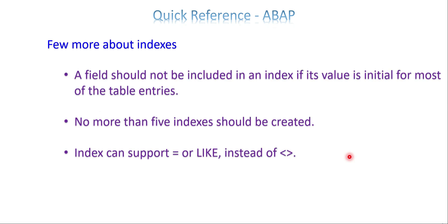A field should not be included in an index if the value is initial. You may know from business requirements if these values are going to be initial, so don't keep those fields in the secondary index. If most of the table entries are going to be initial, better avoid those things. No more than five indexes should be created—these are recommendations. Keep a limited level of indexes; that increases performance, especially for other operations, not just reads.